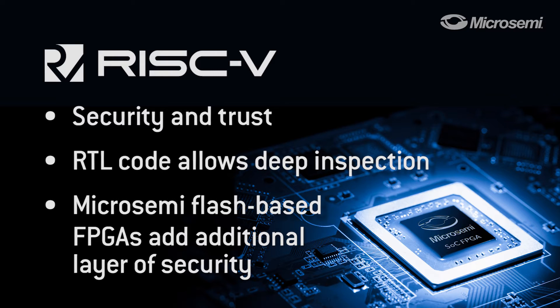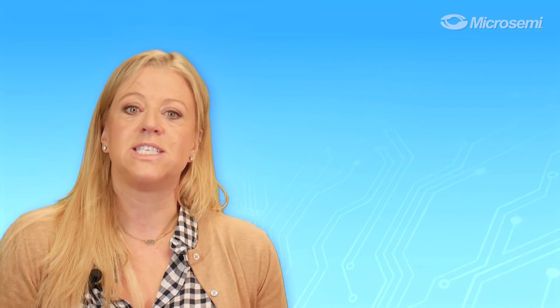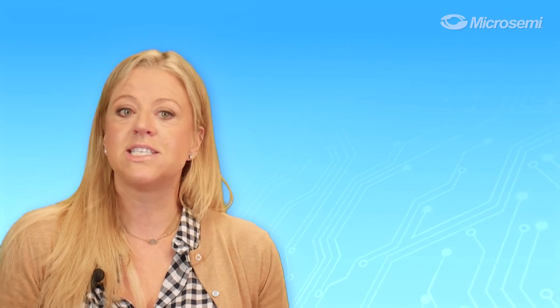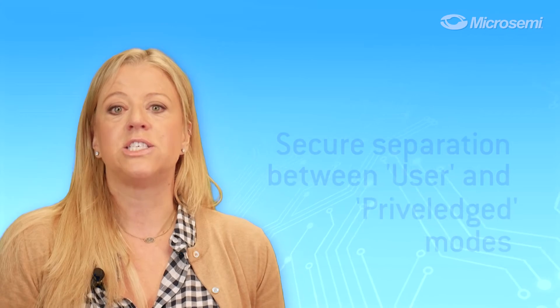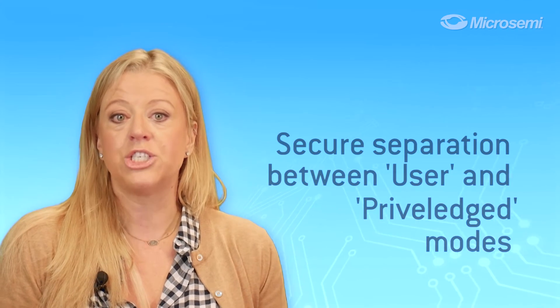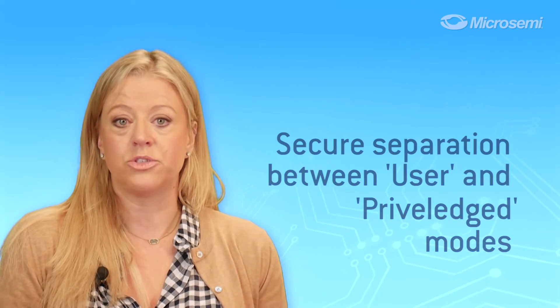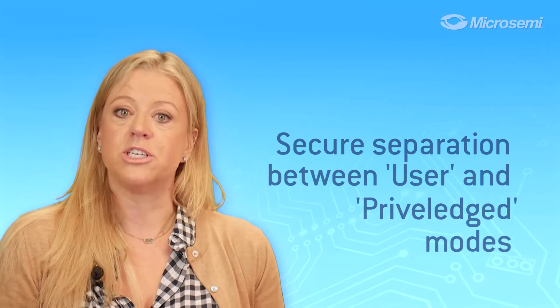For safety-critical designs, RISC-V architecture allows multiple, autonomous, functionally-equivalent cores for redundancy. RISC-V also offers a stable, clean-slate design with clear and secure separation between user and privilege modes.